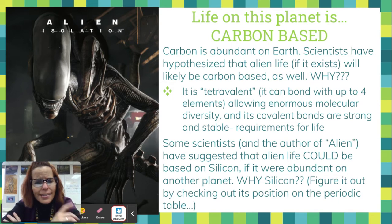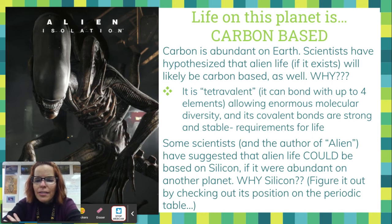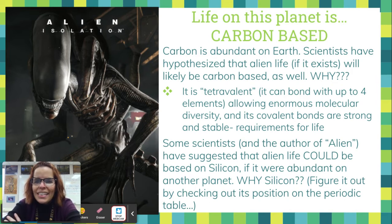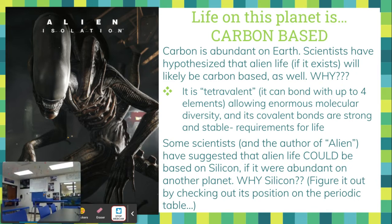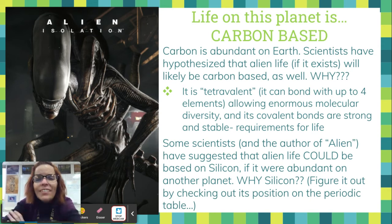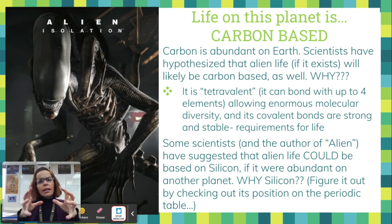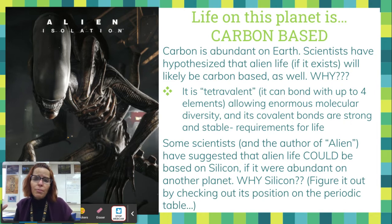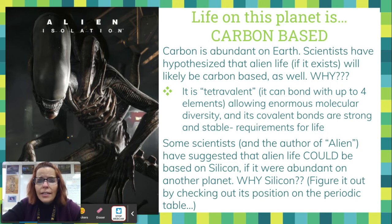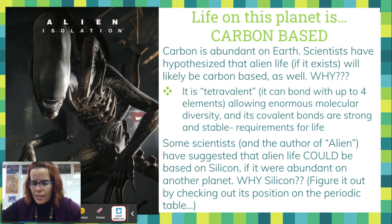Some scientists and the author of the movie and book series Alien have suggested that alien life could be based on the element silicon, if it were abundant on another planet and carbon was not. Why silicon? Take a look at your periodic table. Silicon is right underneath carbon, which means silicon is also tetravalent. However, silicon's electrons are one orbital removed from its nucleus, so they're not held on as tightly. That means silicon's bonds are not as strong and stable. So we're thinking carbon has to be what life is based on — on any planet, it's going to have to have water and carbon.